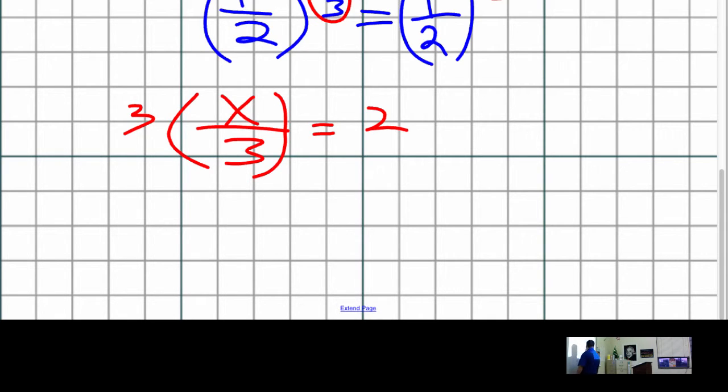I could say x over three equals two, multiply this side by three, multiply this side by three, and I get x equals six.